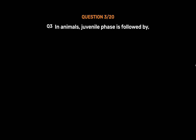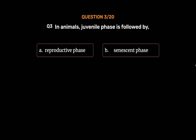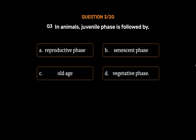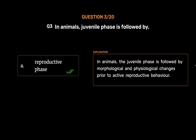Question No. 3: In animals, the juvenile phase is followed by. Option A: Reproductive phase. Option B: Senescent phase. Option C: Old age. Option D: Vegetative phase. The correct answer is Option A: Reproductive phase. In animals, the juvenile phase is followed by morphological and physiological changes prior to active reproductive behavior.